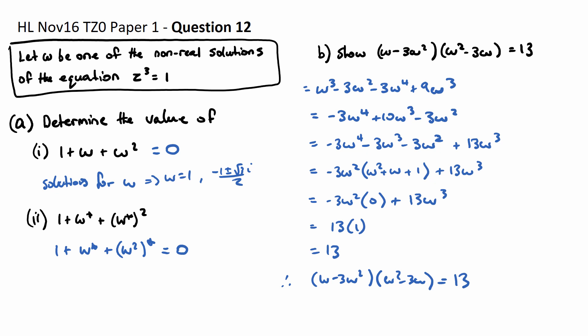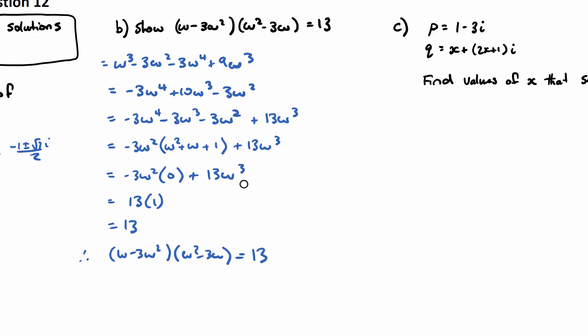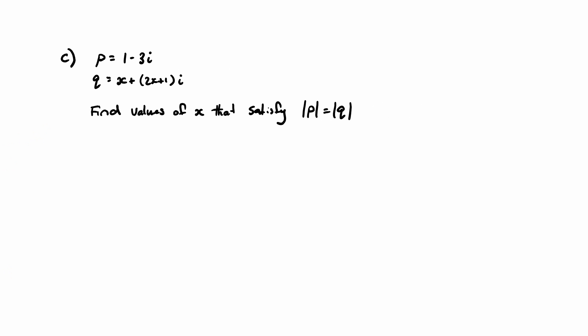So question 12 part C. Consider the complex numbers P which is 1 minus 3i and Q which is x plus 2x plus 1i, where x is an element of the real numbers.